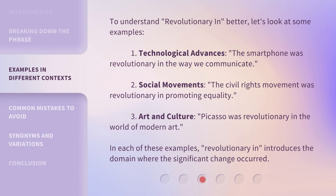To understand 'revolutionary in' better, let's look at some examples. One: technological advances — the smartphone was revolutionary in the way we communicate. Two: social movements — the civil rights movement was revolutionary in promoting equality. Three: art and culture — Picasso was revolutionary in the world of modern art. In each of these examples, 'revolutionary in' introduces the domain where the significant change occurred.